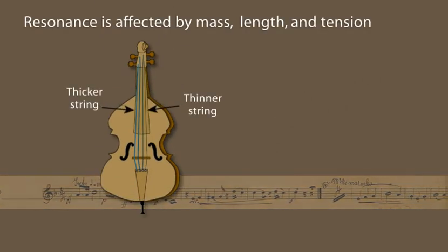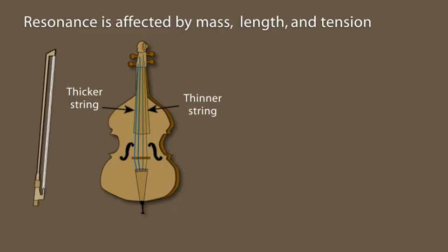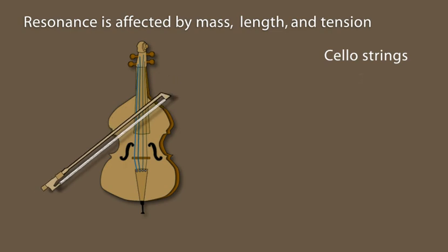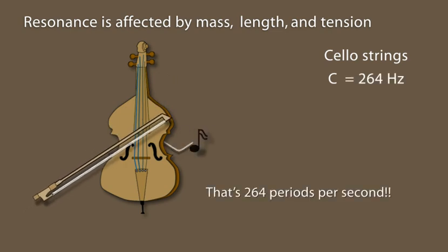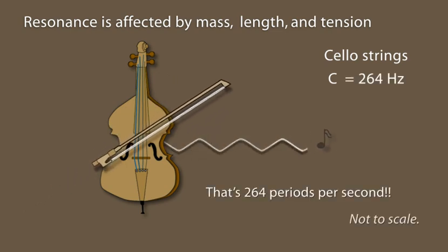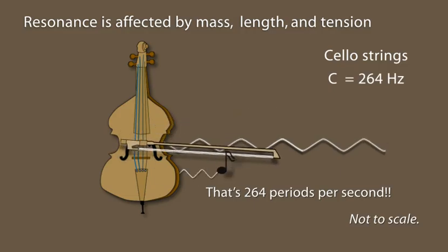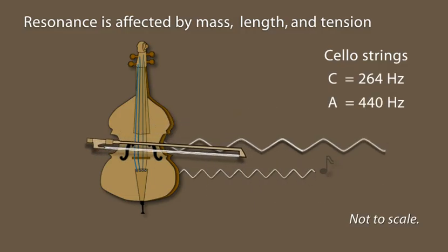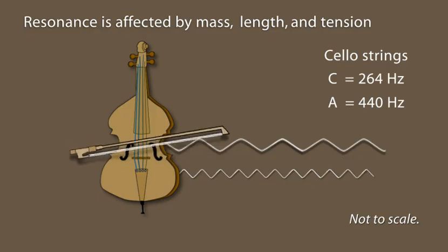Resonant frequencies are related to the mass, length, and tension of the string. The mass of this low C string resonates at 264 hertz, whereas the thinner A string of a different material resonates at 440 hertz.